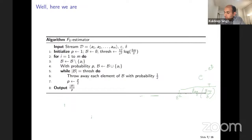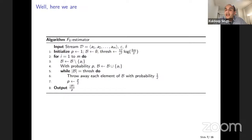This is the entire algorithm. We maintain a bucket. With probability P, we add an element to the bucket. If the number of elements in the bucket reaches the threshold, we throw away every element with probability half and set P to P divided by 2. Our estimate at any point in the stream is B over P — the number of elements in the bucket divided by P.